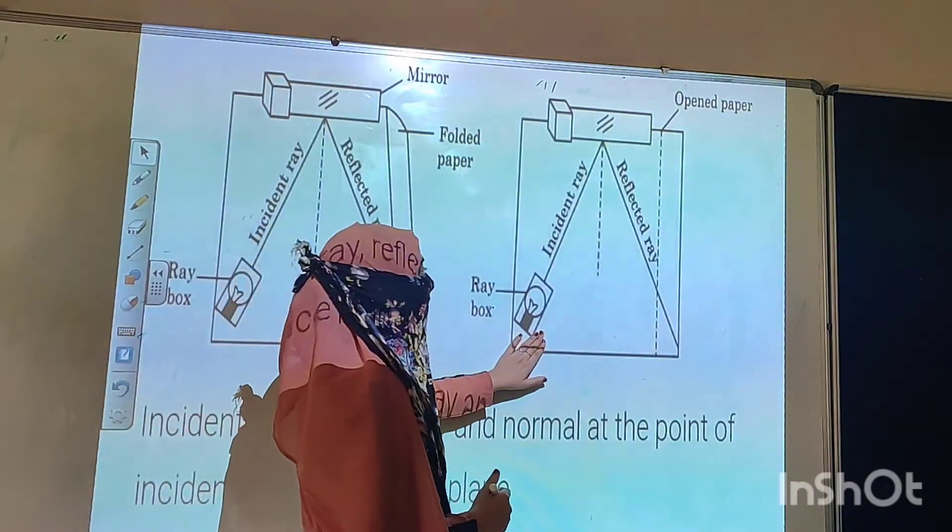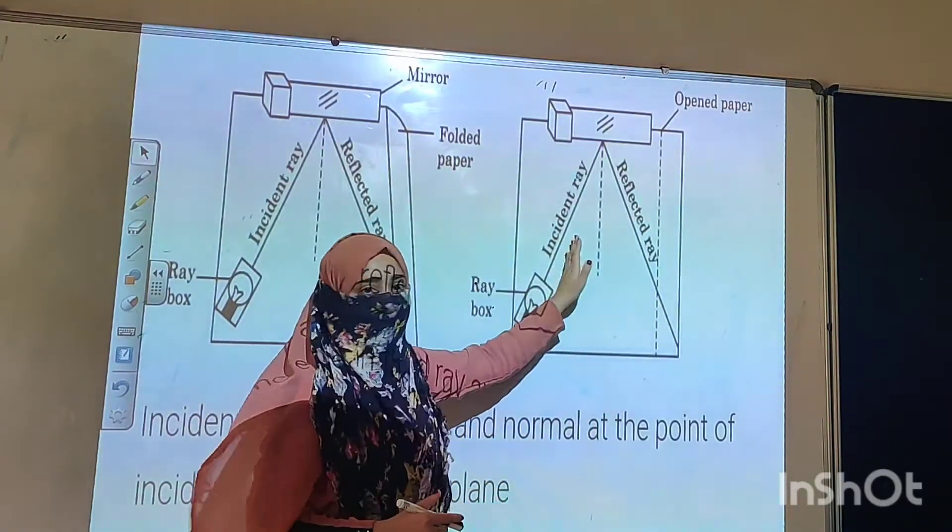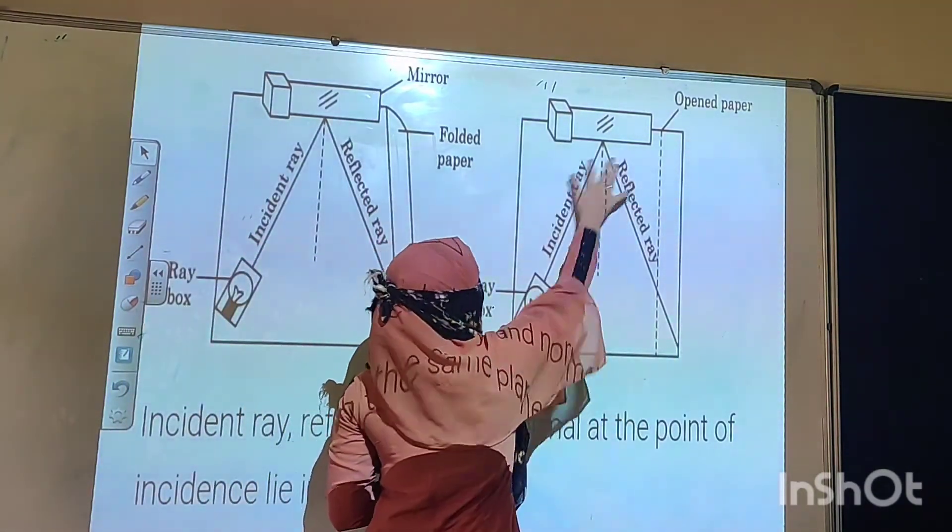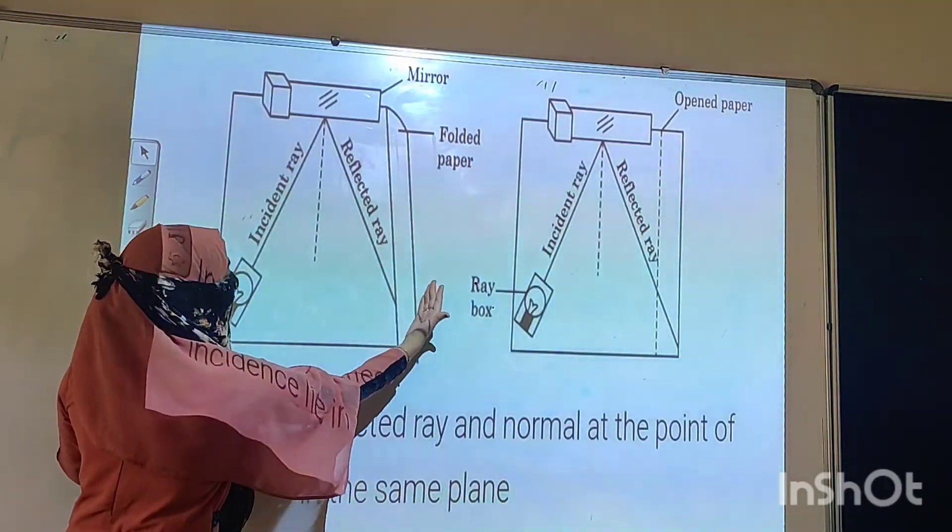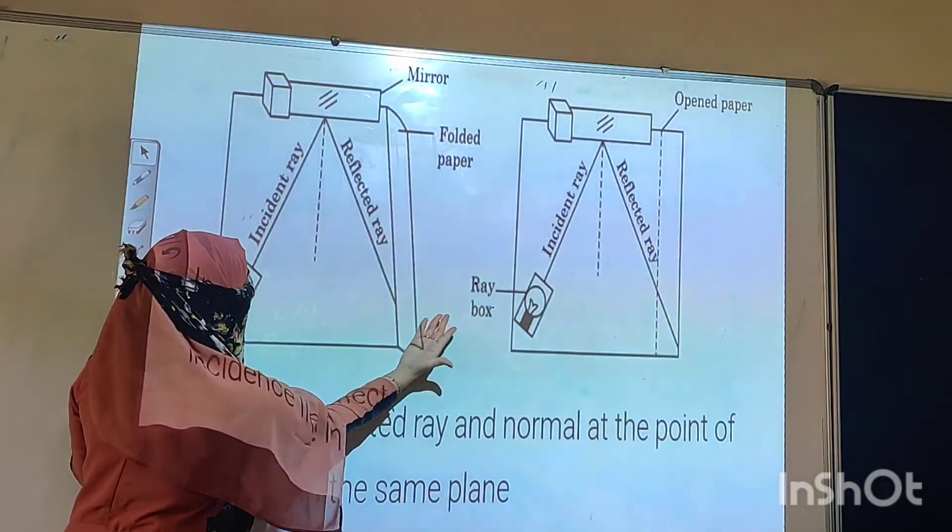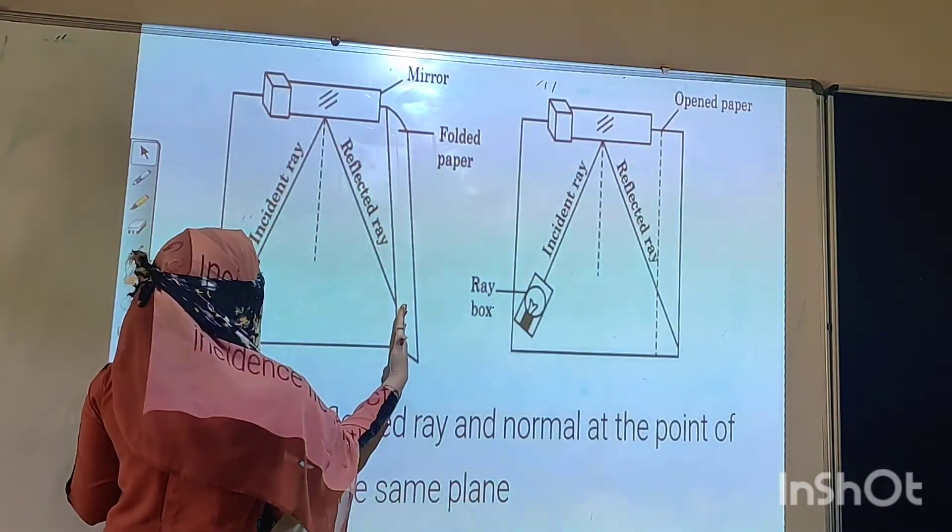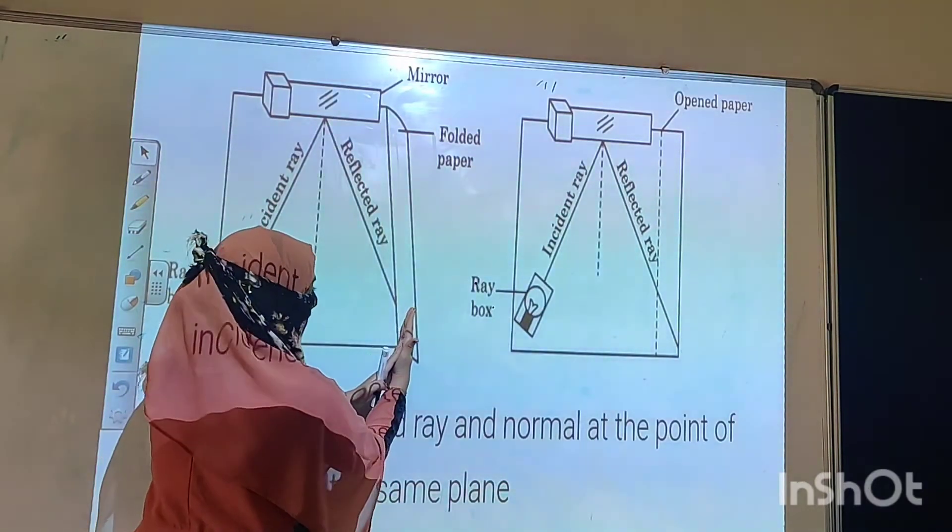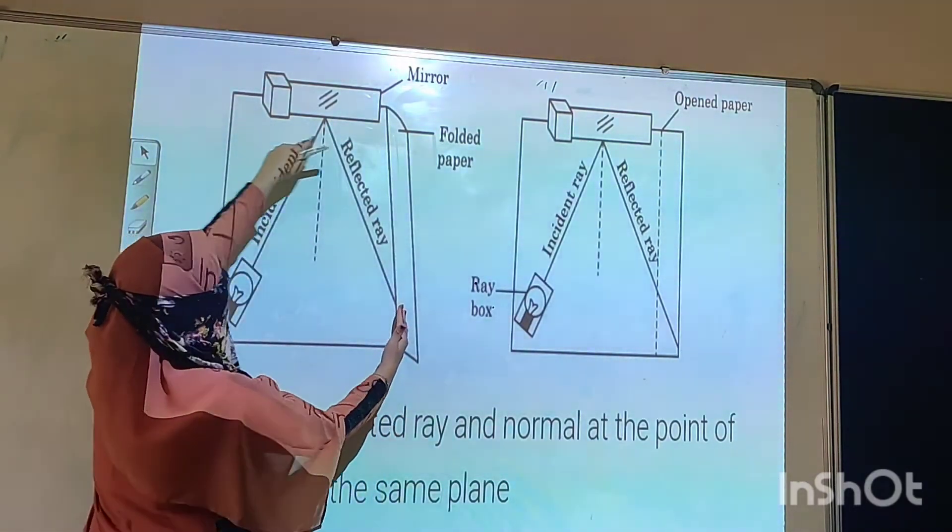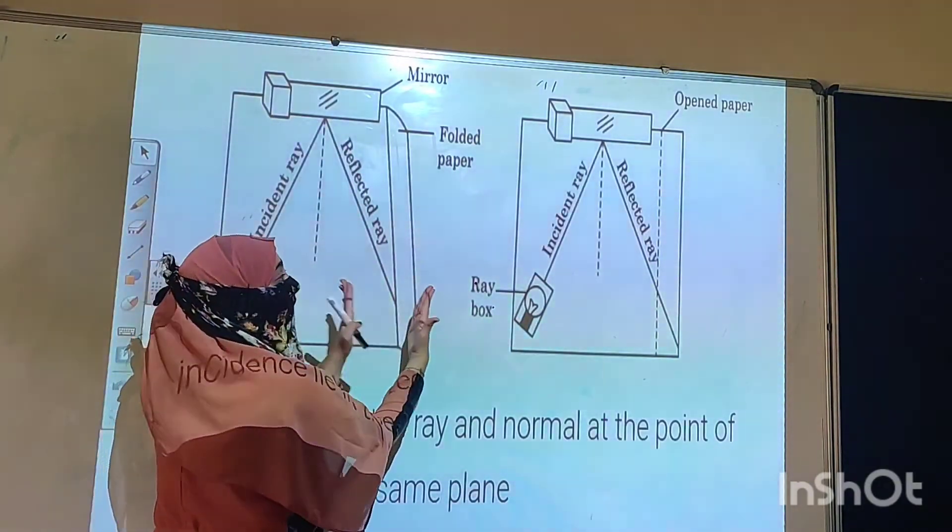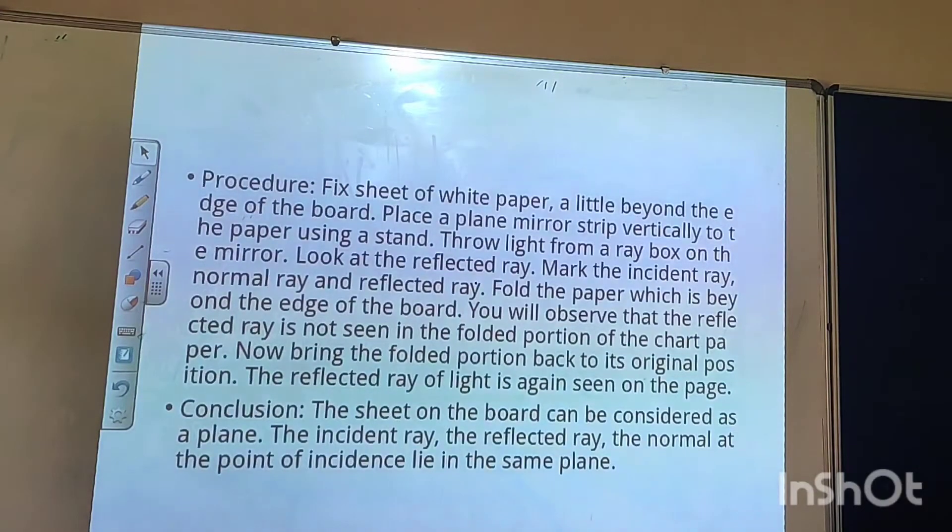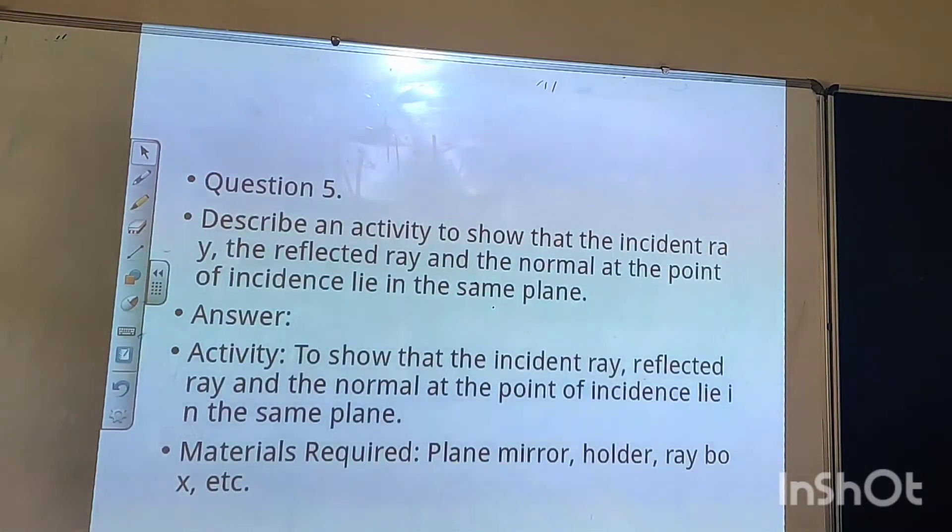Then after if you will fold this paper, this reflected ray will not be seen on the paper. So what it means? Incident ray, reflected ray, and normal, these all three lie in the same plane. Here you can see, this is the open paper, so right now this is the same plane.